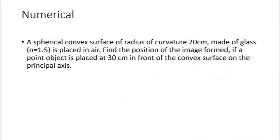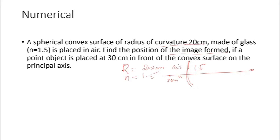Now I will do a numerical example. A spherical convex surface of radius of curvature 20 cm, made of glass with refractive index n equals 1.5, is placed in air. Find the position of the image if a point object is placed 30 cm in front of the convex surface on the principal axis. Here, n1 equals 1 (air), n2 equals 1.5 (glass), u equals minus 30 cm, and R equals plus 20 cm (convex surface). We use the formula n2/v minus n1/u equals (n2 minus n1)/R.